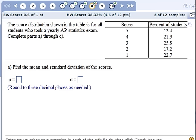Okay, the score distribution shown in the table is for all students who took a yearly AP statistics exam, complete parts A through C.